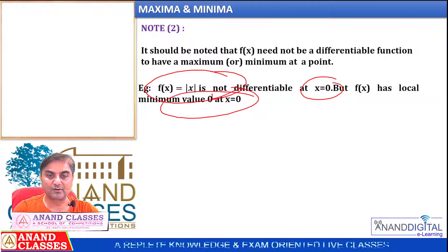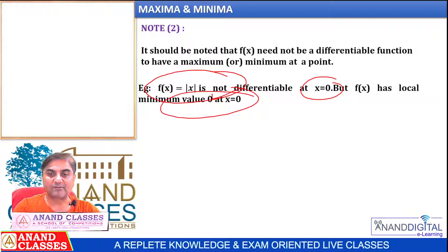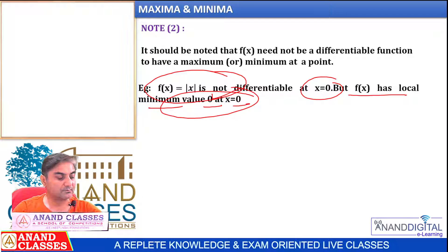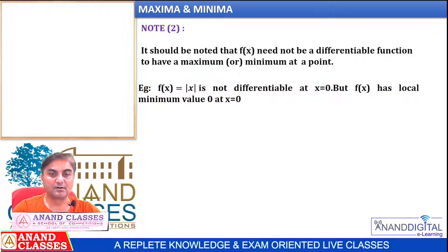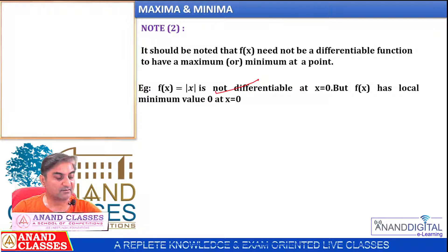So f(x) = |x| has local minimum value 0 at x = 0, even though the derivative of that function does not exist at that point.